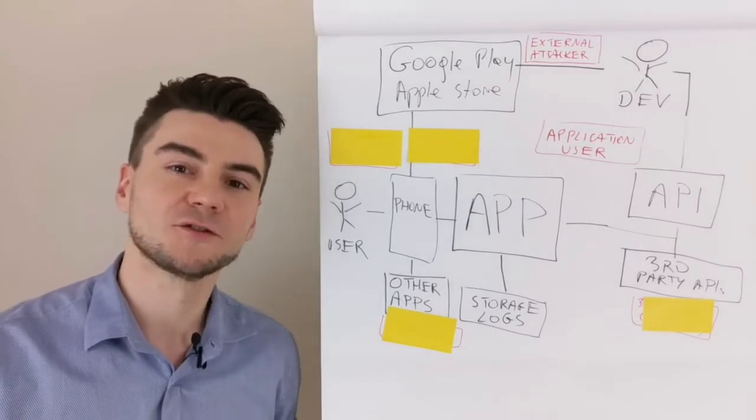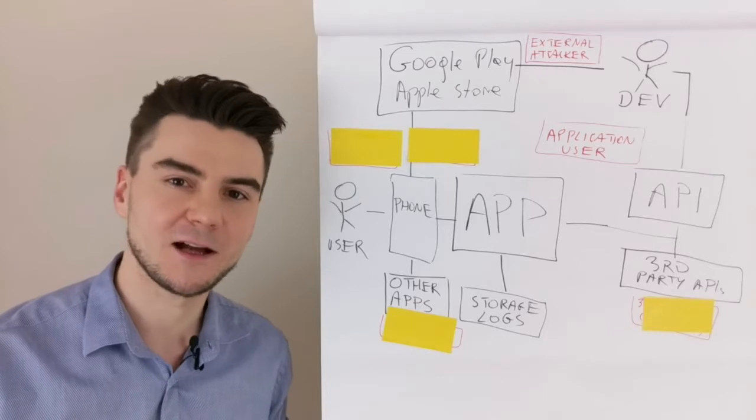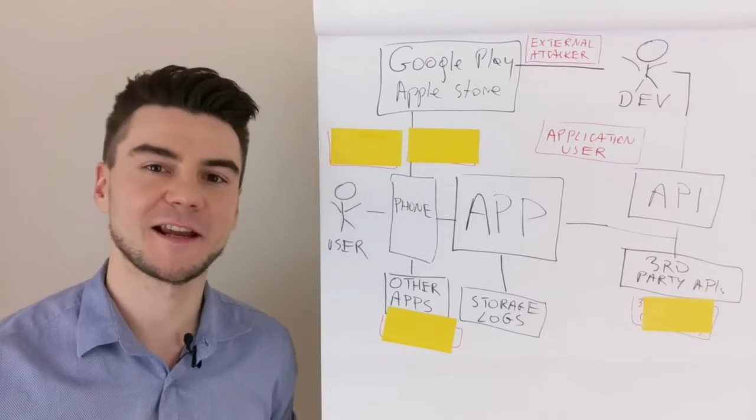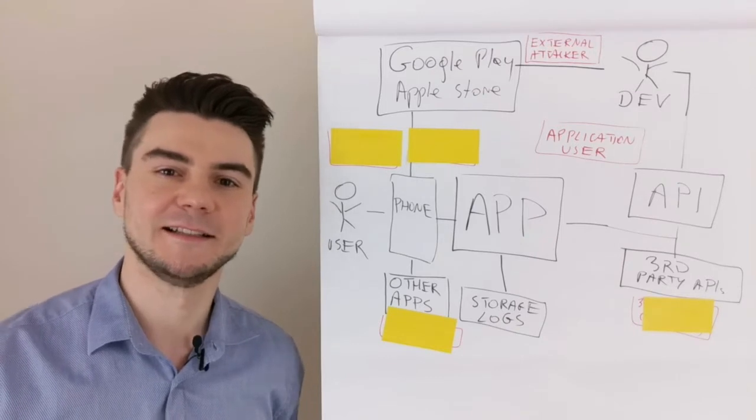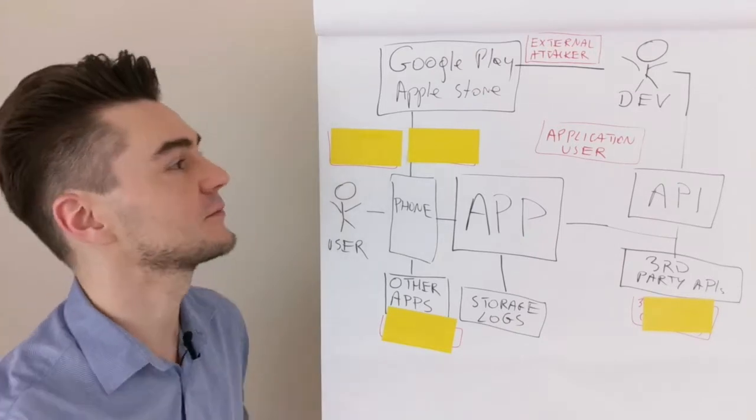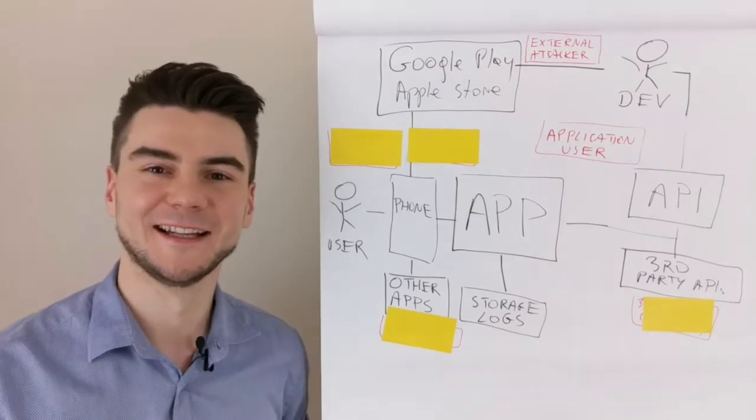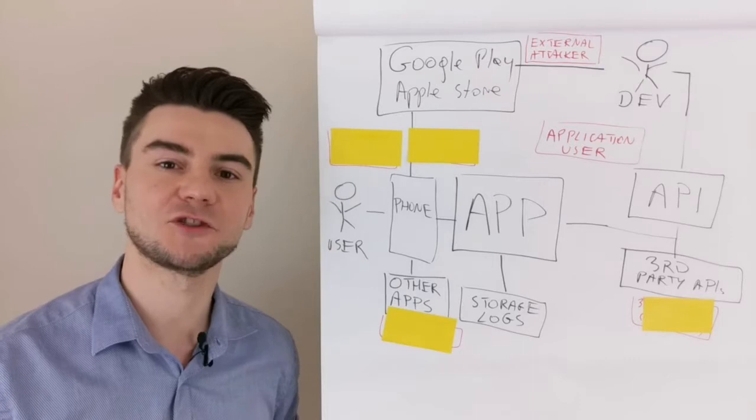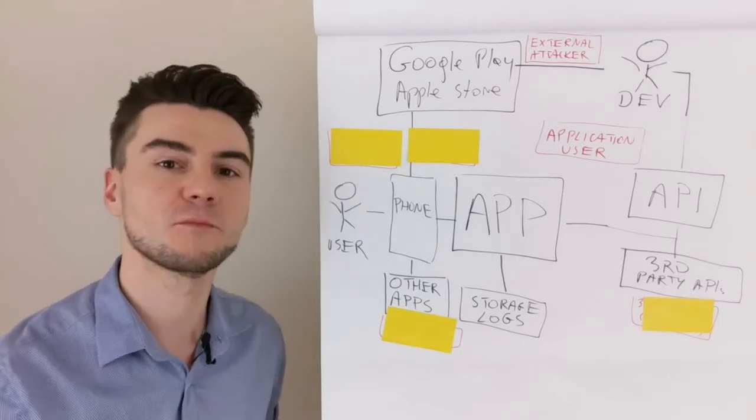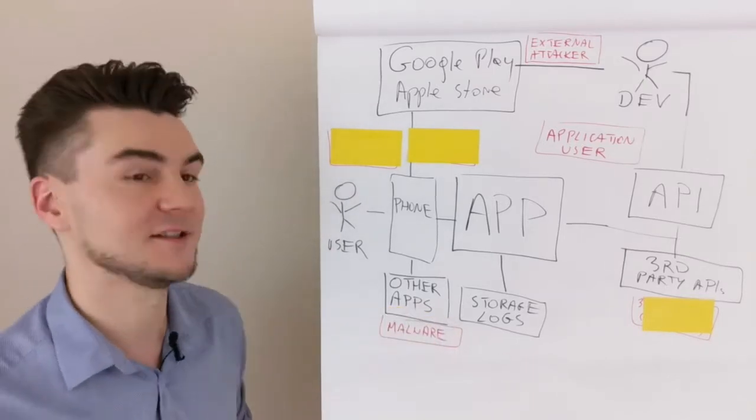External attackers can attack the CI CD pipeline and compromise the developer accounts. Distribution of malicious applications via untrusted sources is allowed to compromise mobile devices and install malware.